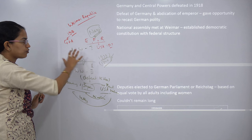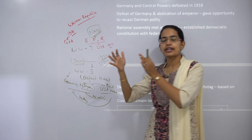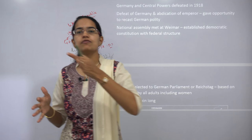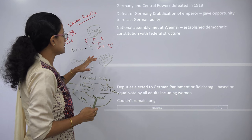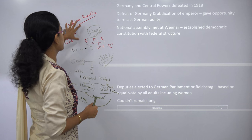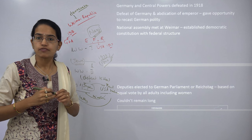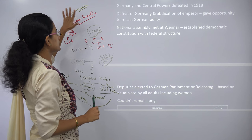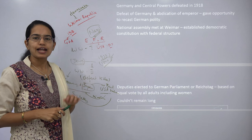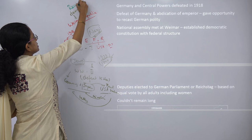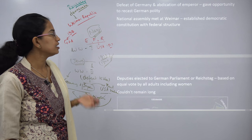World War I formed the basis for understanding Germany's transformation. Under World War I, Germany and Austria were on one side and England, France and Russia on the other. Initially Germany was overpowering Russia and France, but later it was defeated when the United States entered the war. As a result the Weimar Republic was formed, which was democratic in nature. Under the Weimar Republic there was a federal structure, and a parliament known as the Reichstag was formed, based on equal votes for all adults including female members.